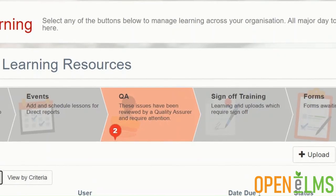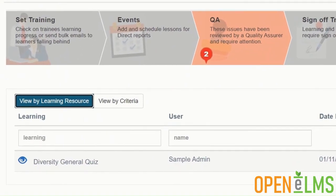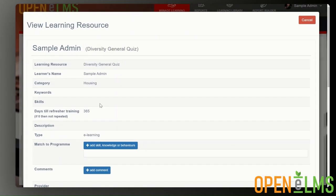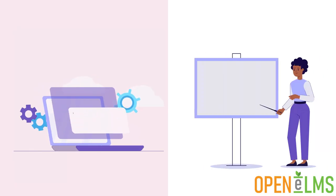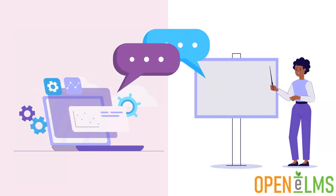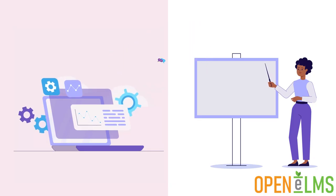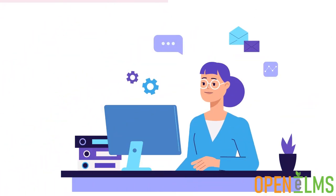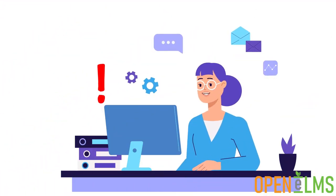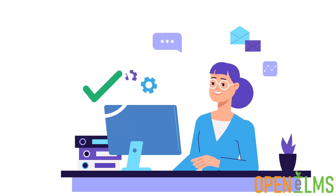Quality Assurance allows you to give access to Open Elms to third parties for independent inspection of the system. Inspectors can add comments to learning programs as well as onto learning resources themselves. Where problems are detected, management get notified immediately and need to make changes to the underlying system to pass inspection.